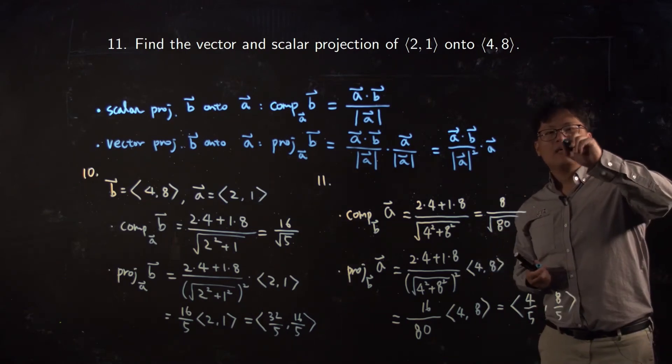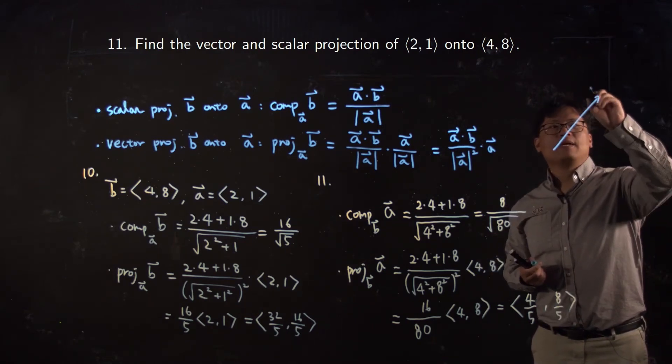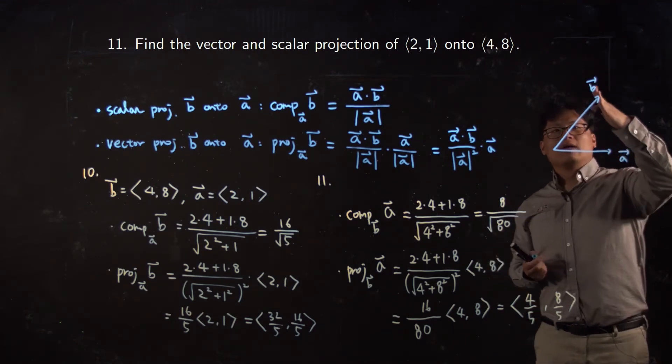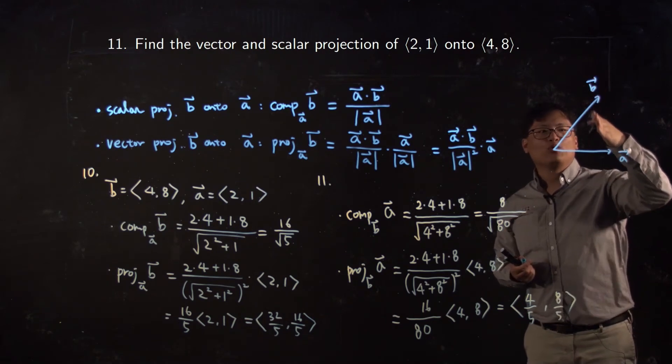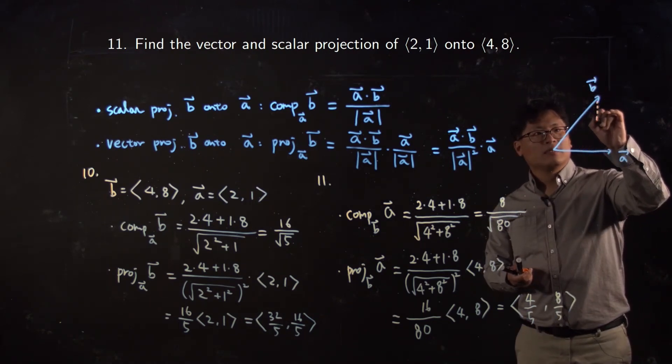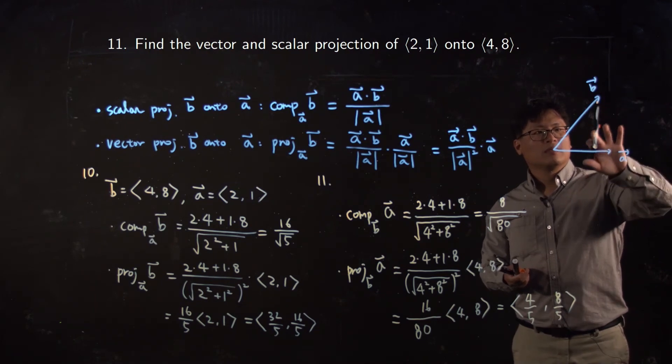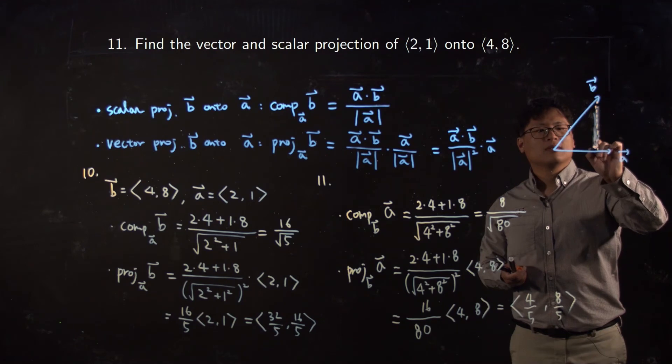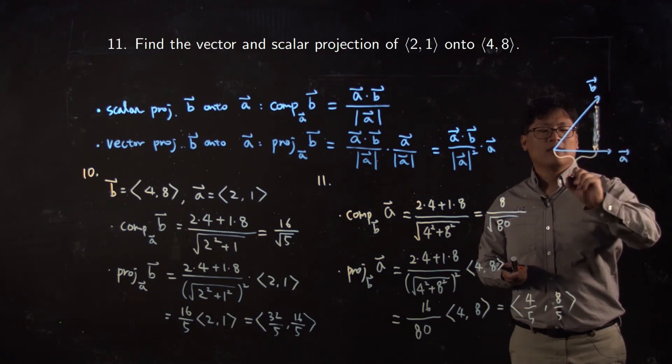So basically, let's say vector b is here and vector a is here. If you project vector b onto a, the meaning is this guy, that is b onto a. But what about the other one? If you project your vector a onto b...